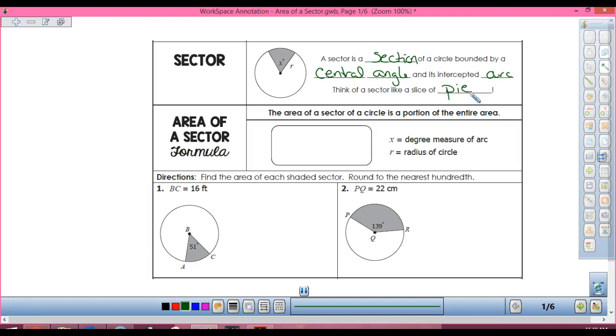How do I find the area of a circle? Pi r squared, yep. And if I just want a section of the area of a circle, what am I going to have to do? I'm going to have to take the measure of that section. So x over 360, just like we did yesterday. Only this time, instead of taking part of the circumference, we're taking part of the area.